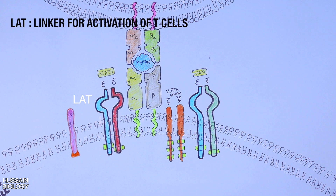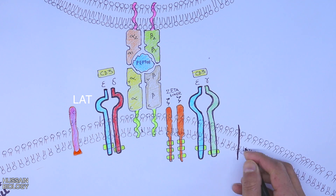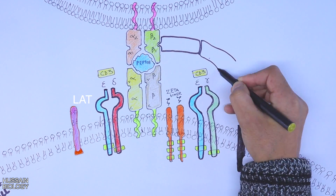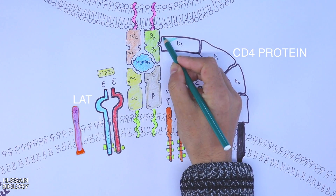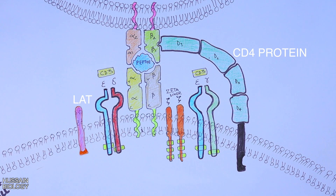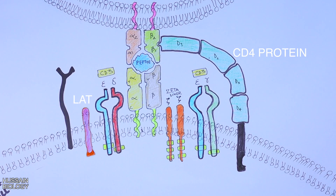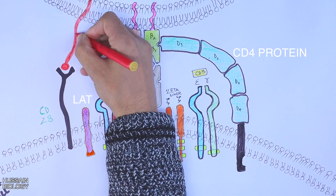LAT stands for Linker for Activation of T cells, or Linker of Activated T cells. The most important protein on the T cell membrane is the CD4 protein, which gives the T cell its name as CD4 positive. CD4 has four subunits: D1, D2, D3, and D4. This CD4 protein interacts with the beta chain of the MHC2 molecule, helping to drive T cell activation through intracellular signaling. The second signal — the co-stimulatory signal — is mediated by CD28 on the T cell interacting with the B7 protein of the APC.